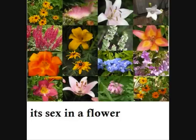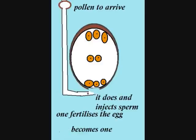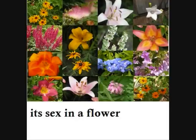It's sex in a flower. Back in the ovule, it's divided in three — the egg at center bottom, waiting for pollen to arrive. It doesn't inject sperm, but fertilizes the egg, becoming one.